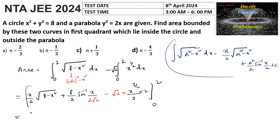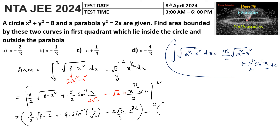Substituting the upper limit x = 2: (2/2)√(8 - 4) + 4 · sin⁻¹(2/(2√2)) - (2√2/3) · 2^(3/2). This gives 1·√4 + 4·sin⁻¹(1/√2) - (2√2/3)·2^(3/2). Since sin⁻¹(1/√2) = π/4, this becomes 2 + 4·(π/4) = 2 + π. The lower limit at x = 0 contributes 0.